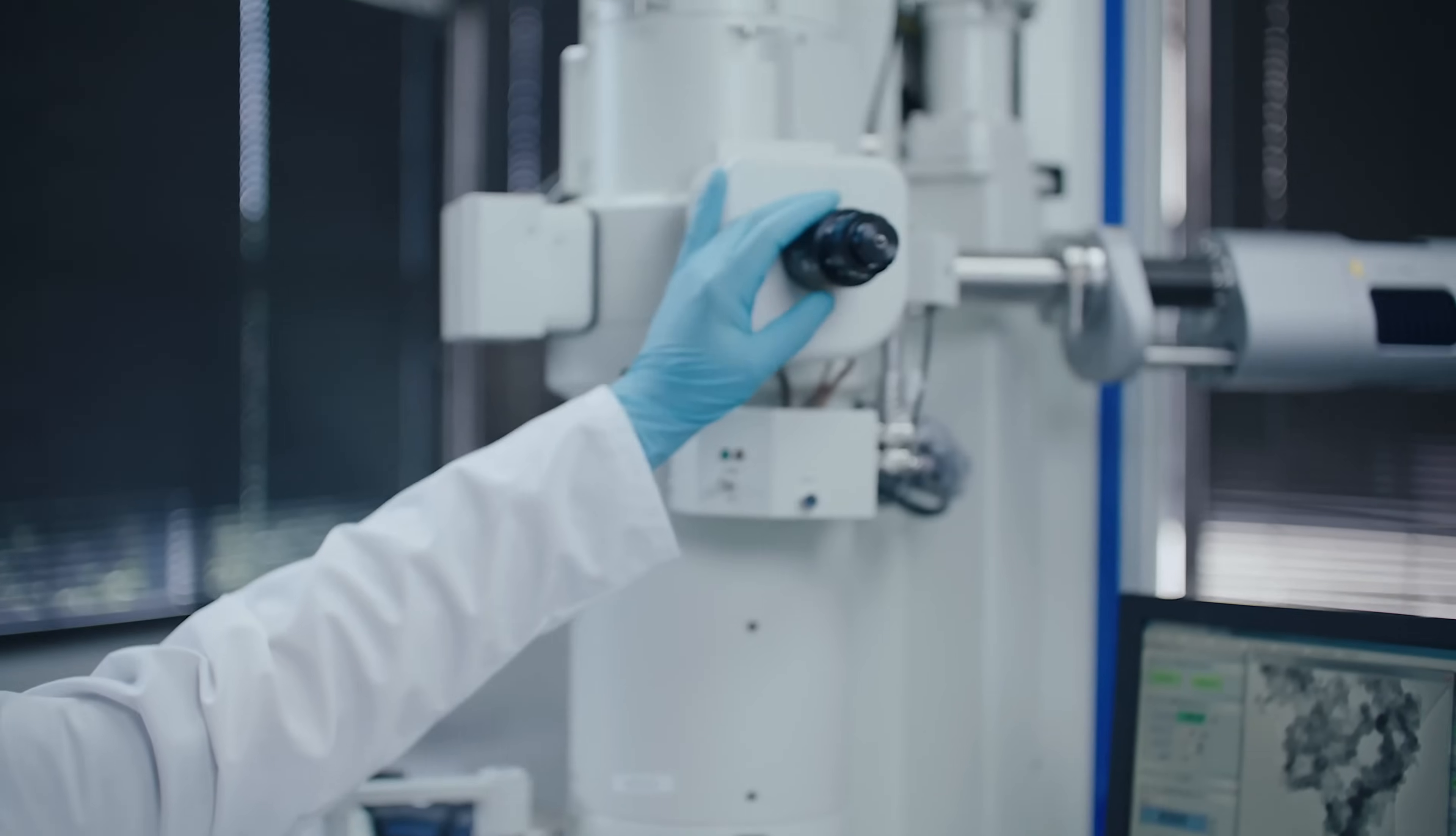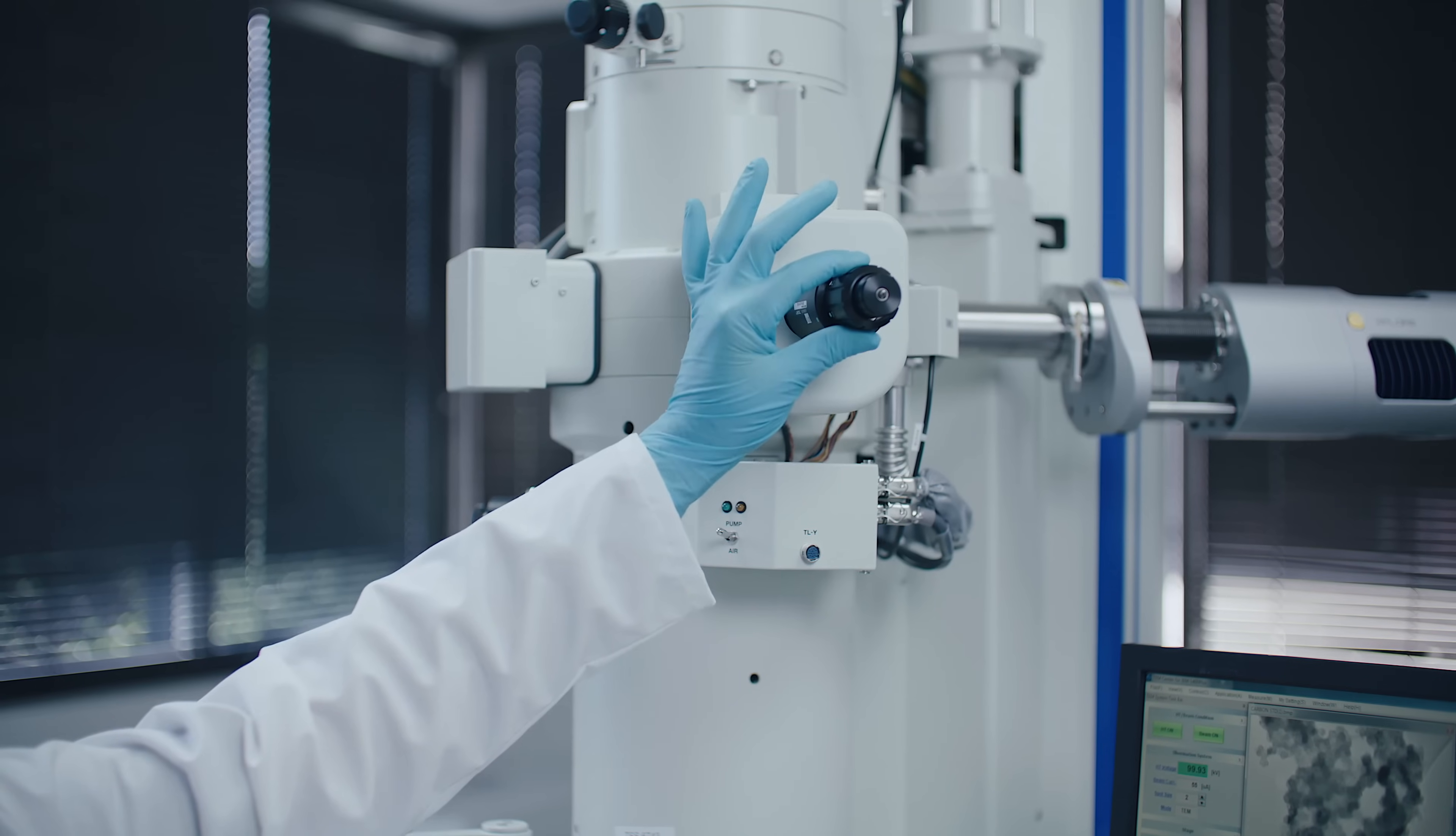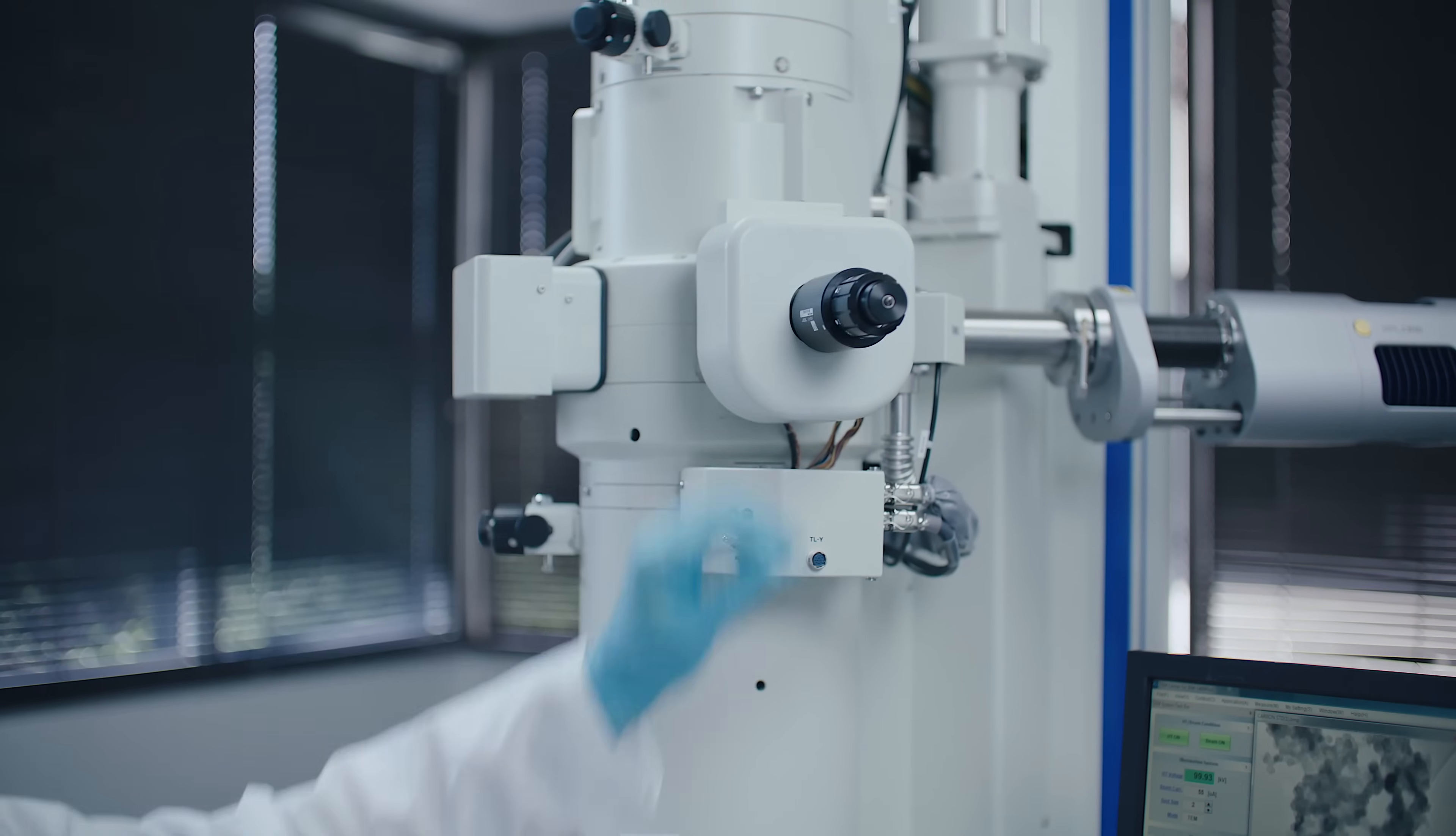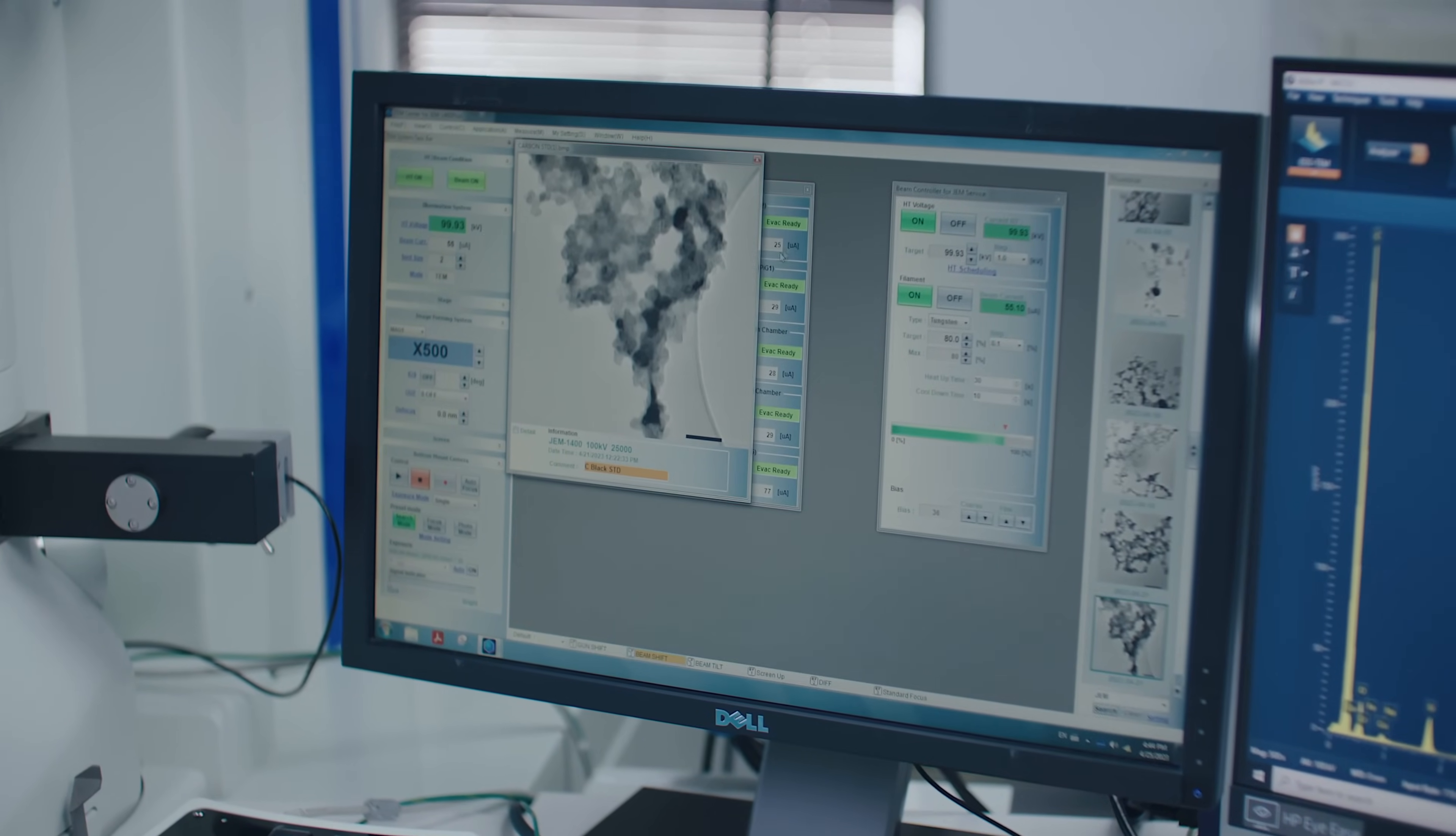So here we have our sample holder. This is our quartet sample holder. It holds four of them together and we can easily rotate between them like so. That is going to be put in through here and then we have to pump down and prep it again.